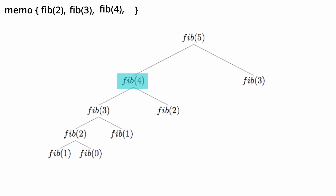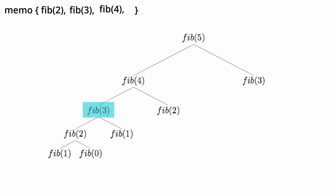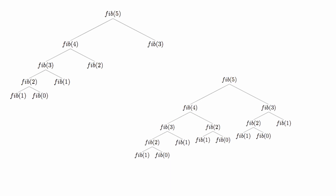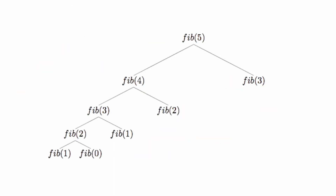Finally, back at our initial call for fib 5, we then make the right call to fib 3, but we already solved fib 3, so we just return the cached result. We now have our dynamic programming solution for finding the nth Fibonacci number, which uses a top-down memoization approach. As you can already see in this tree diagram, we are drastically decreasing the number of calls to the fib function, which decreases the time complexity from exponential to O(n).